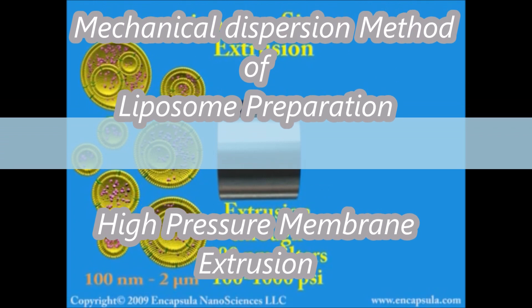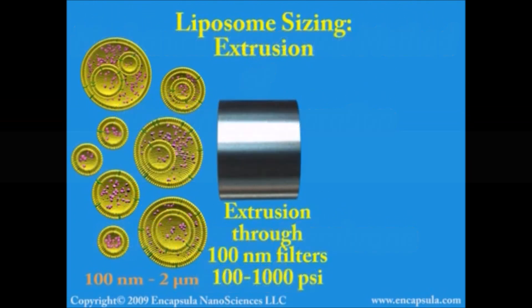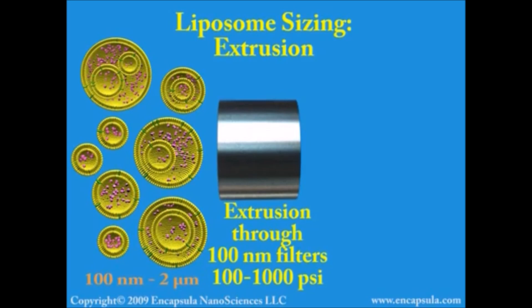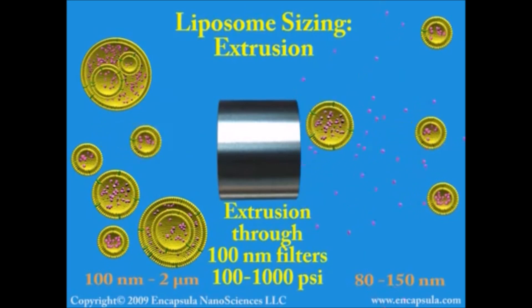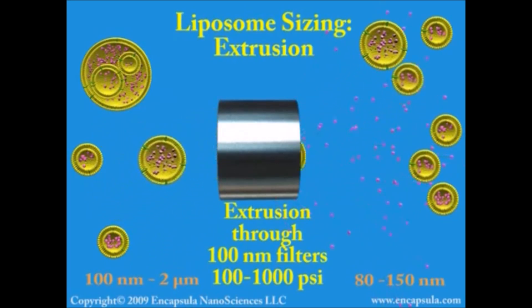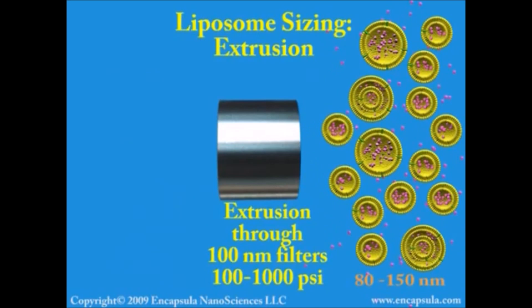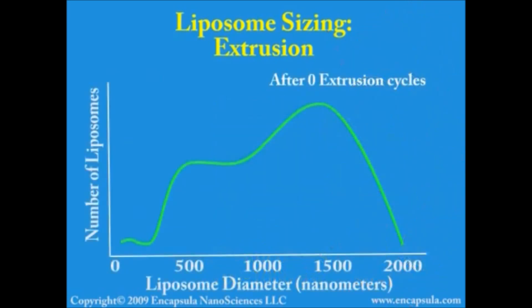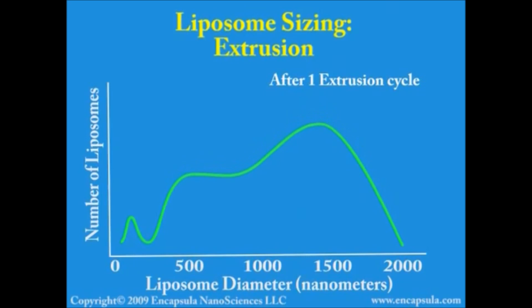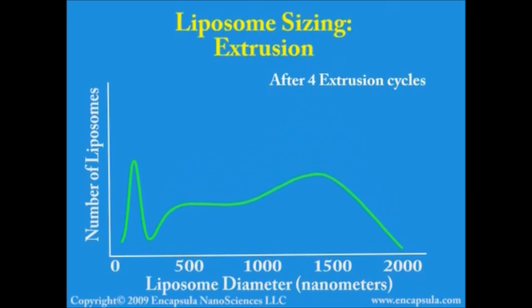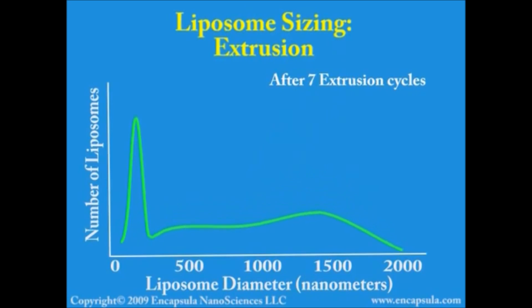The only method which can produce a definable unimodal distribution of liposomes in the hundred nanometer range is high pressure extrusion through membrane-type filters of a fixed pore size. The stainless steel device which supports the filters used for extrusion withstands internal pressures in excess of 1000 psi; extrusion cannot be accomplished with standard liquid filtration devices. Larger extruders are pressurized by nitrogen, while extruders handling volumes less than one milliliter utilize gas-tight syringes to generate pressure manually. Extrusion must be carried out above the phase transition of the lipids in order to achieve a narrow size distribution, and the liposomes must be passed through the filters 10 times or more.